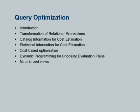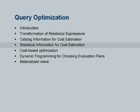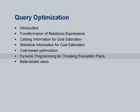We will split the area into several parts: one is transformation; the second is catalog information for cost estimation including statistical information; how to do the cost estimation; and then how do you use cost-based optimization using dynamic programming; and then a little bit about maintenance of materialized views. Most probably I will not get to this last part at all today but you can read it later.